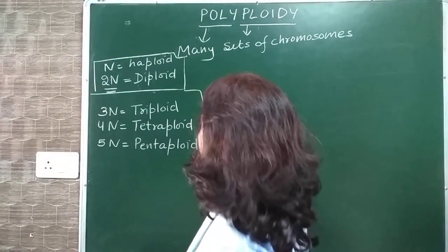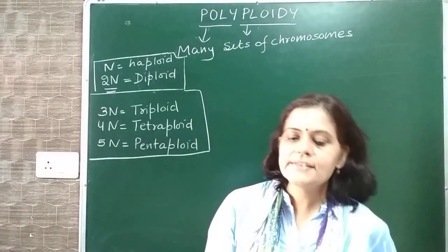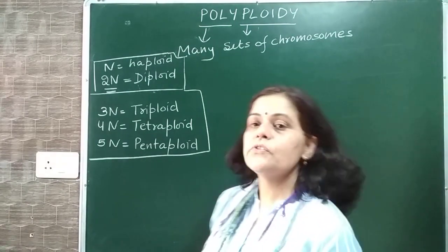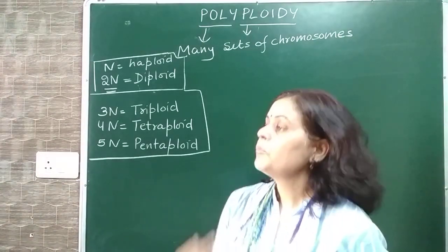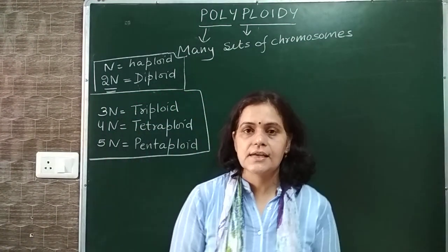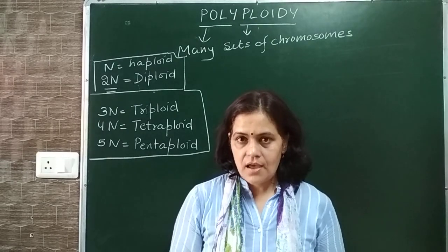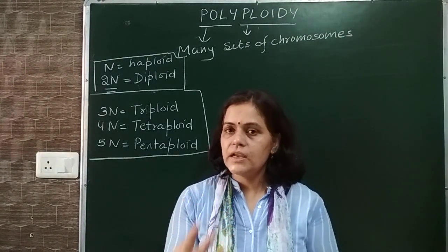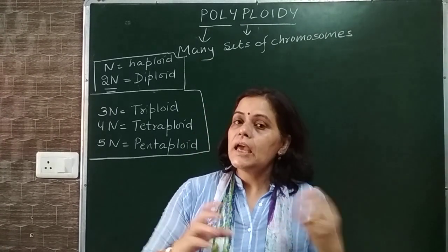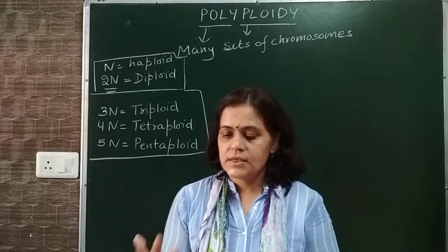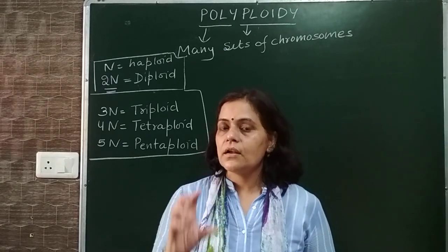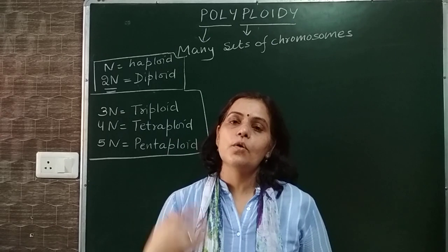Now we will discuss how a cell gets three sets, four sets, or five sets of chromosomes. What is the reason behind the formation of polyploids? One reason is non-disjunction. Polyploidy means many sets of chromosomes - more than two complete sets.